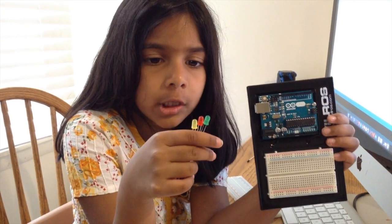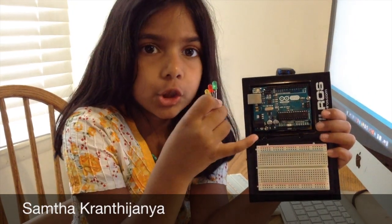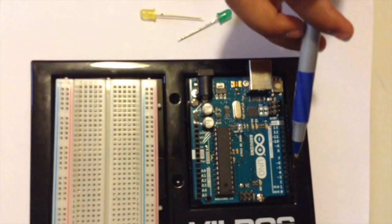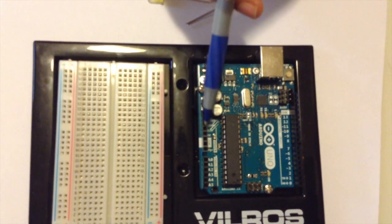Today we're going to make a circuit which will blink these LEDs with a microcontroller. This is the board, this is the microcontroller, these are digital pins, these are analog pins, these are power pins.